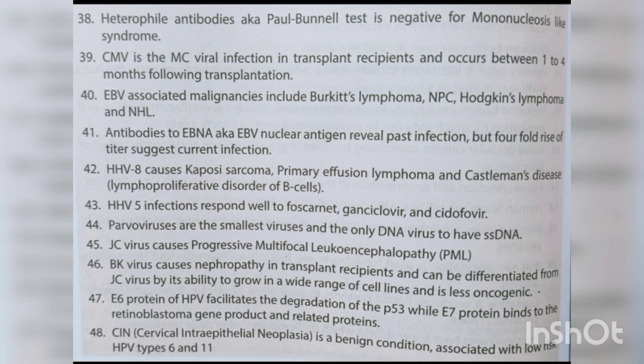EBV-associated malignancies include Burkitt's lymphoma, NPC, Hodgkin's lymphoma and NHL. Antibodies to EBNA (EBV nuclear antigen) reveal past infection, but a 4-fold rise in titers suggests current infection. HHV-8 causes Kaposi's sarcoma, primary effusion lymphoma and Castleman's disease — lymphoproliferative disorders of B-cells. HHV-5 infections respond well to Foscarnet, Ganciclovir and Cidofovir.